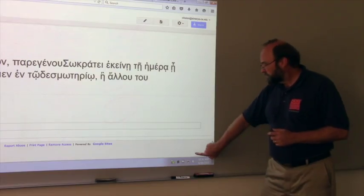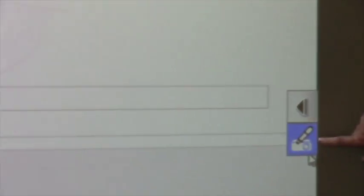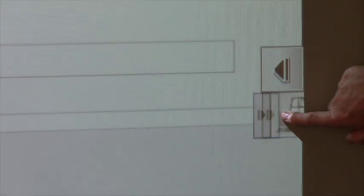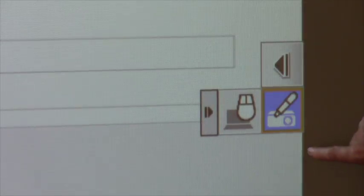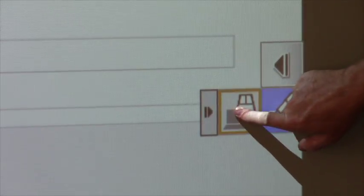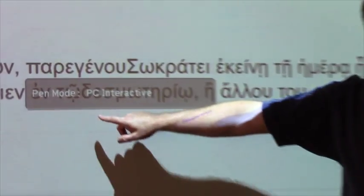Start by touching the board and you'll see this menu pop out. Touch the interactive mode button and it will make the flyout menu with the mouse mode the interactive mode, and now we'll switch to PC interactive mode.